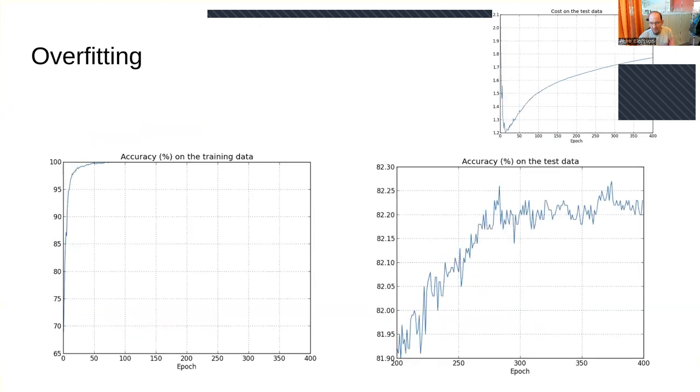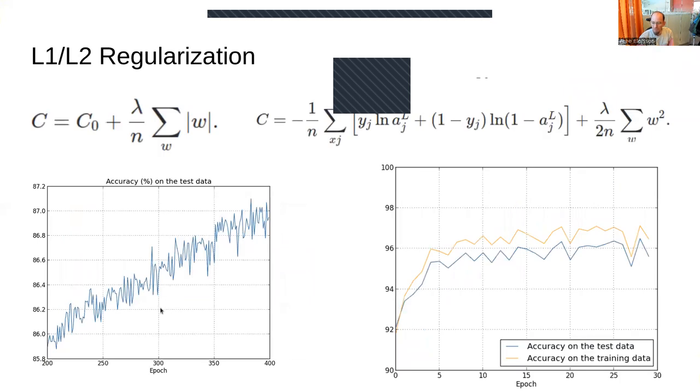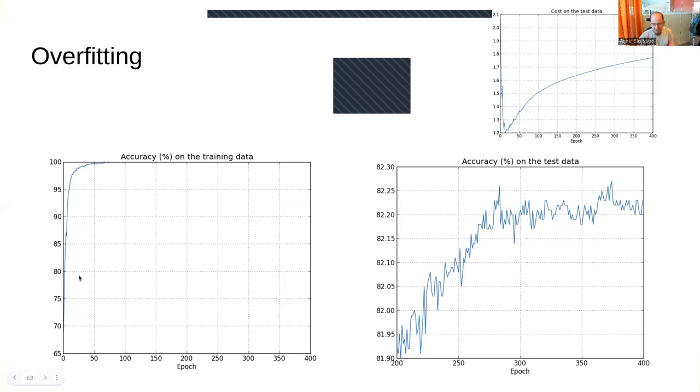A fundamental problem is the risk of overfitting. In one example from the book, accuracy on training data reaches nearly 100% in 50 epochs, but test data goes up much slower, getting stuck around 82%. Looking at the cost, it's not improving and validation accuracy may even go down. This shows overfitting - it works on training data but not test data.